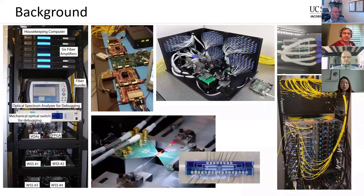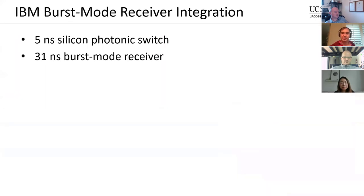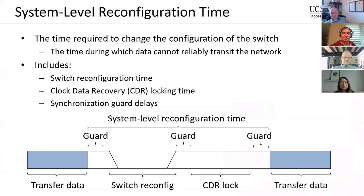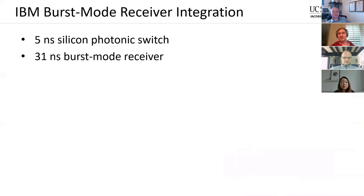That brings me to the first topic: some work I did at IBM Research as an intern over the past couple of years, where we took experimental devices and integrated them to make an experimental optical link. We took a high-speed silicon photonic switch that switches in about five nanoseconds and a burst-mode receiver that locks in about 30 nanoseconds, and put them together.